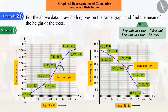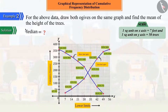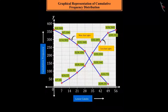Since we have to find the median, and we have both types of ogives, can you guess what we have to do? For this, we will draw both ogives on the same graph.